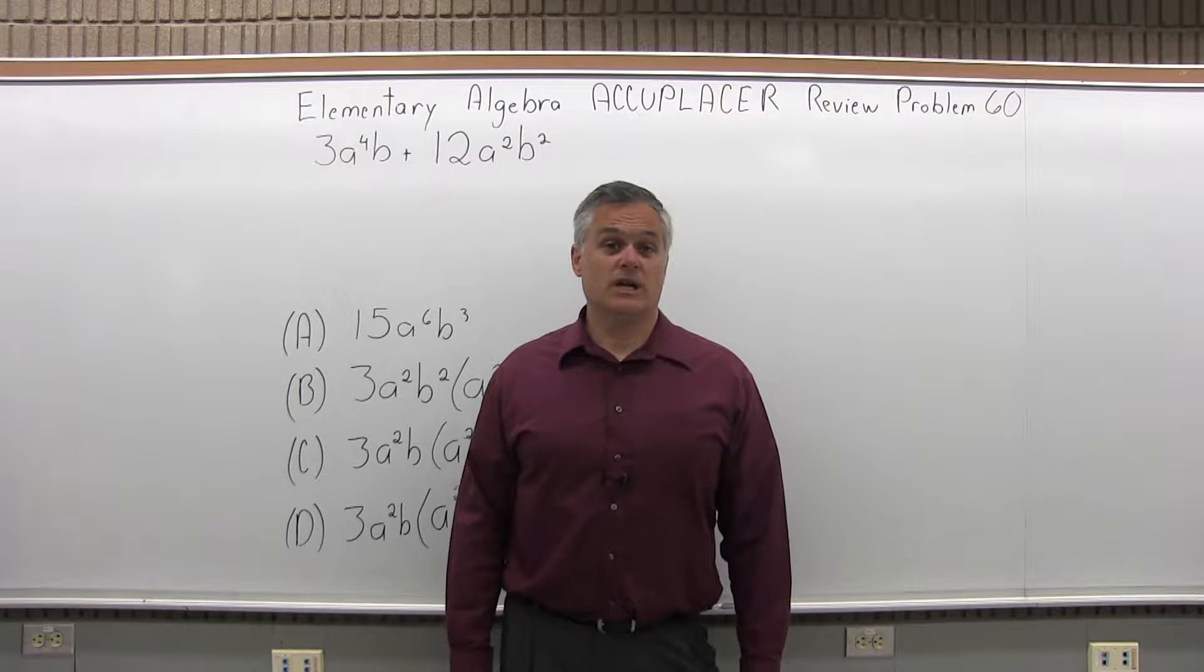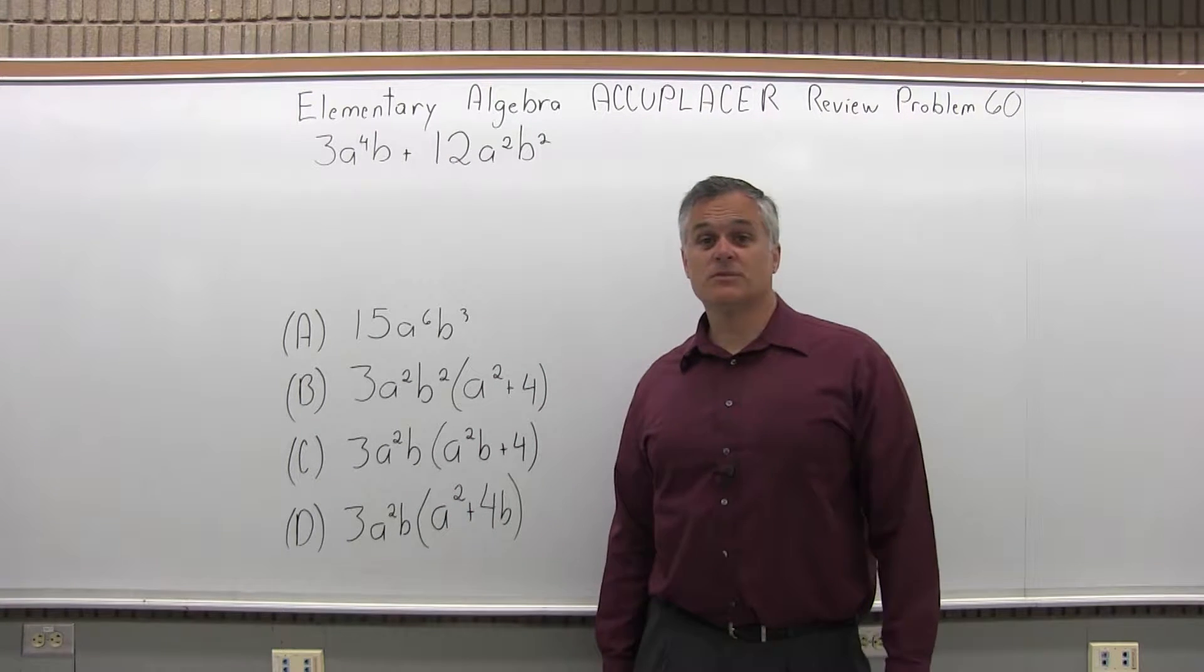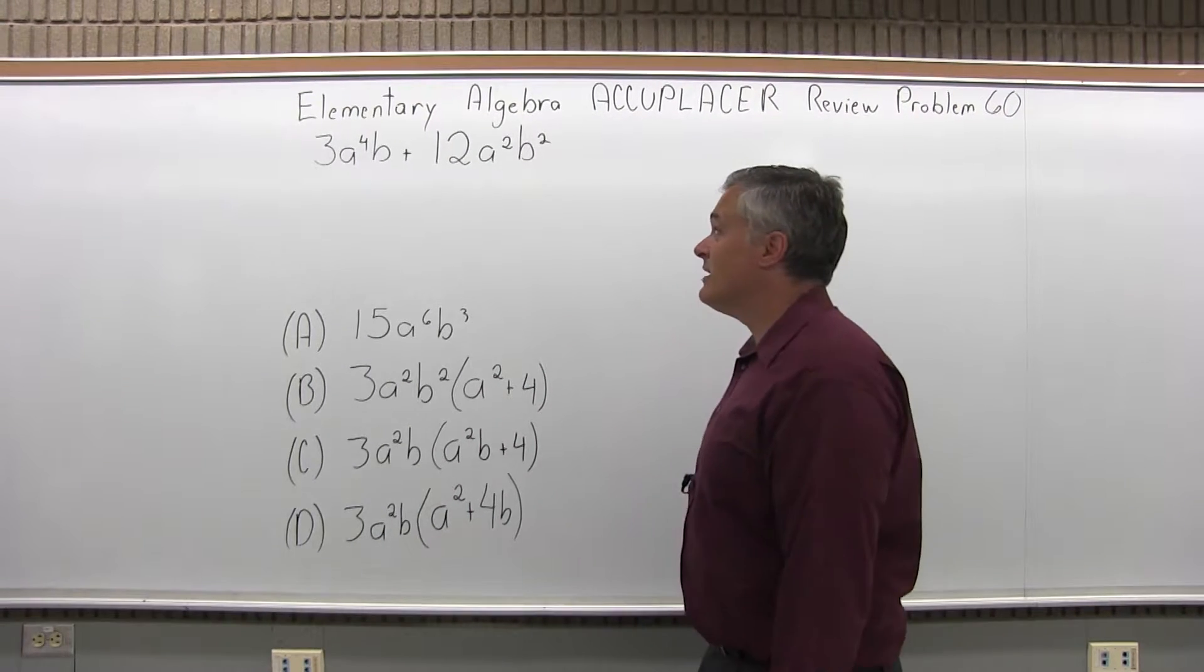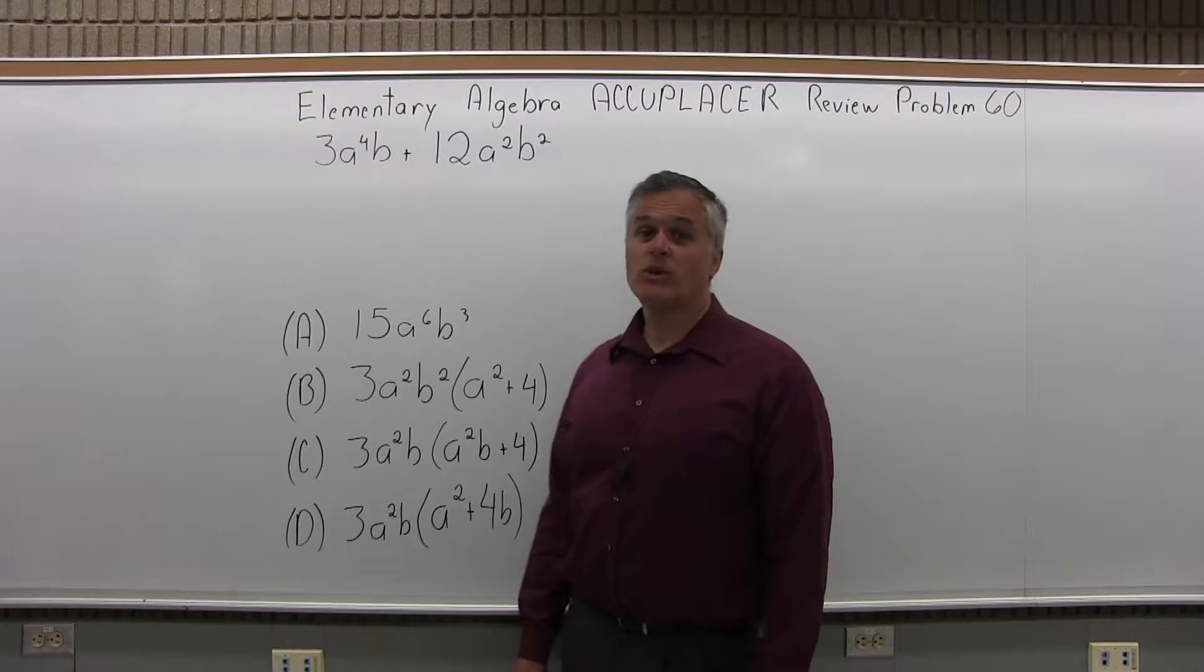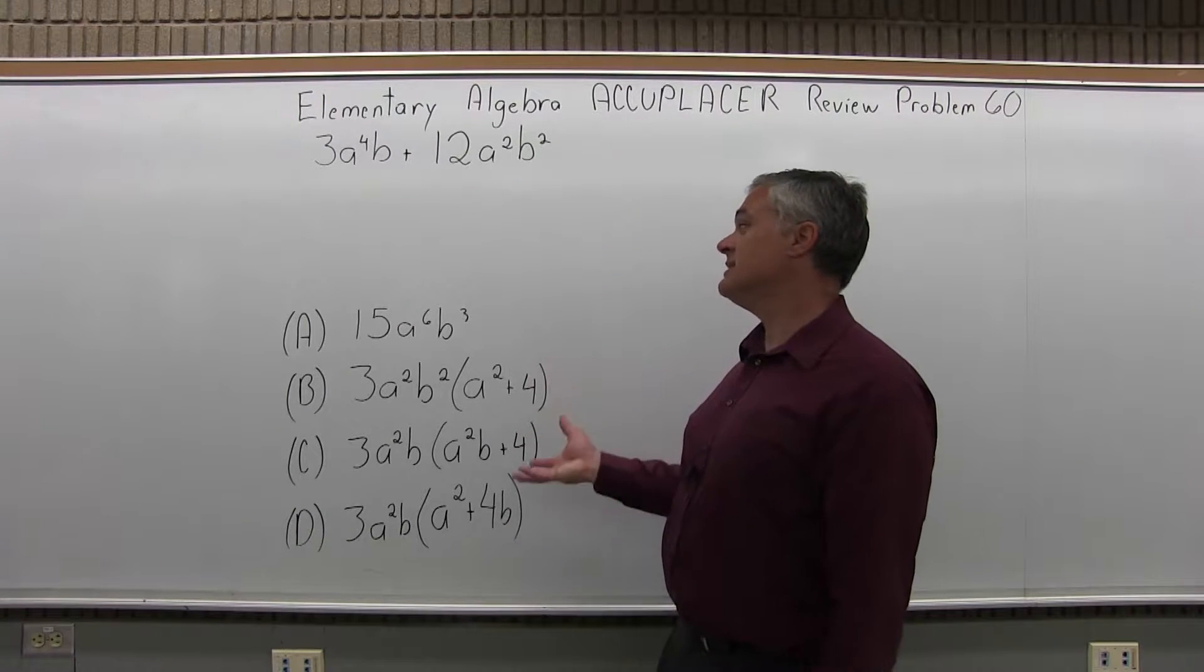This is the Elementary Algebra Accuplacer Review, Problem 60. We have 3A to the fourth B plus 12A to the second B to the second, and we want to see which one of four options it's equal to.